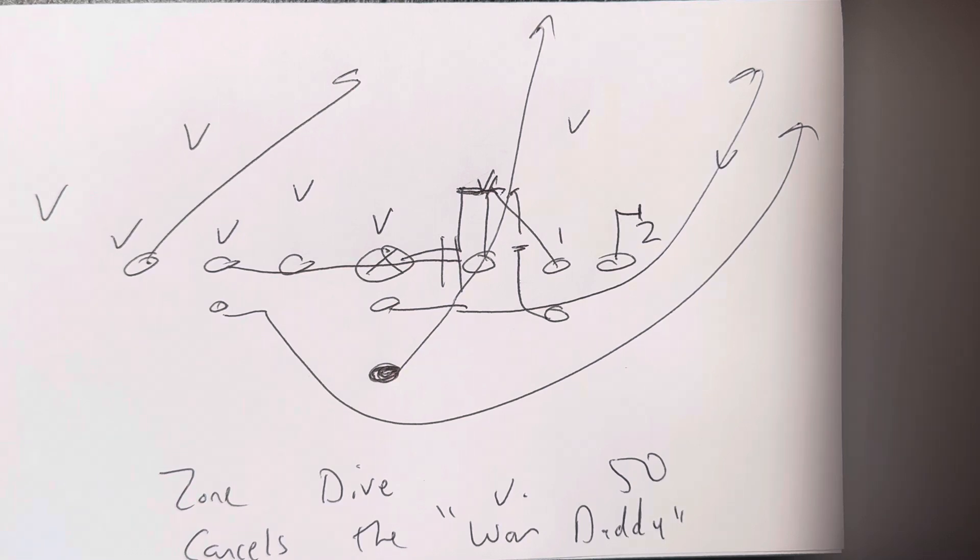He's talking to me in Paul Johnson language. I'm like, bud, like, all those problems you're coming up with, they've all been solved. Like, when they used to get a 4-3 to the three tech and they put the Mike Backer at a depth where he basically became a safety. I said, you're not gonna get that anymore. He just runs zone dive every play. And you're gonna keep getting yard after yard after yard after yard.